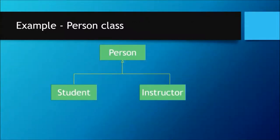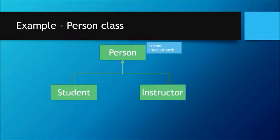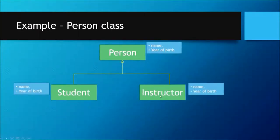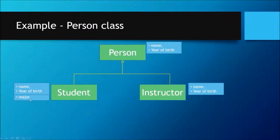Now let's understand our Person class. When we draw the UML diagram, our Person class is the super class. We have a Student class and an Instructor class, and they both extend the Person class. Person has a name and year of birth, which are common to all three classes. Additionally, Student will have a major field and Instructor will have a salary field.